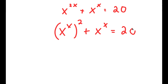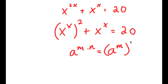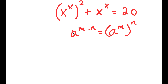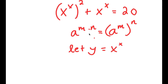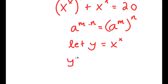I can do this because if I have something in the form a to the power of m times n, this is the same thing as a to the power of m to the power of n. So now I'm going to let the variable y equal x to the power of x. So now I have y squared plus y is equal to 20.